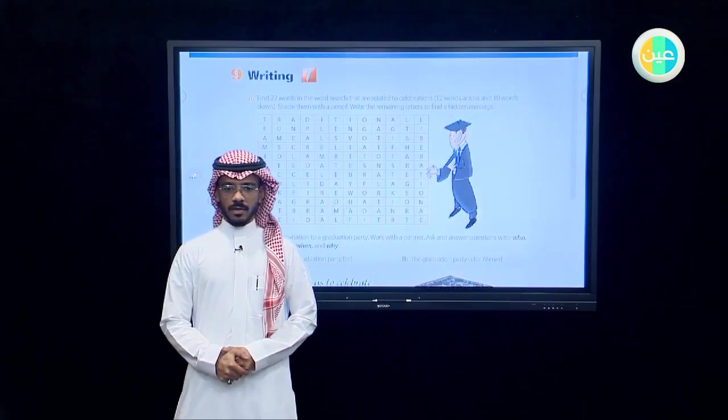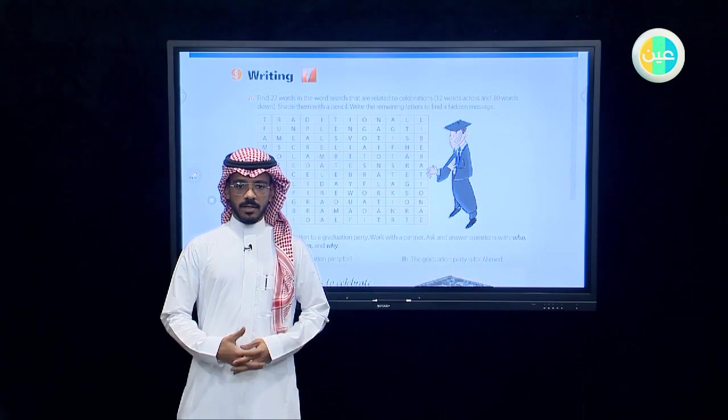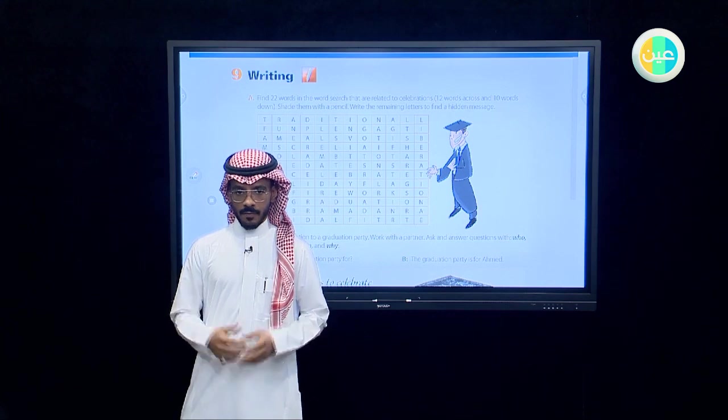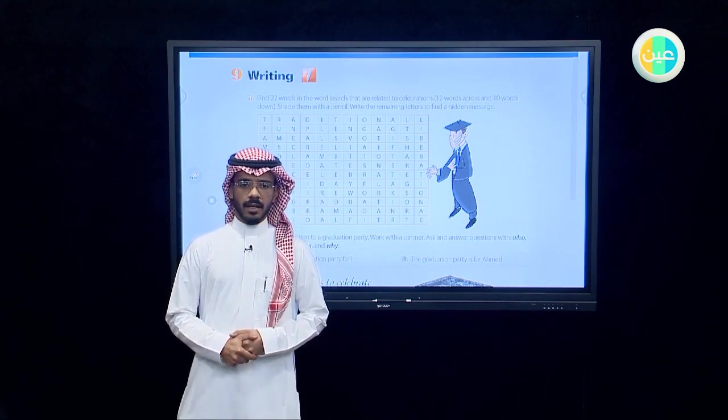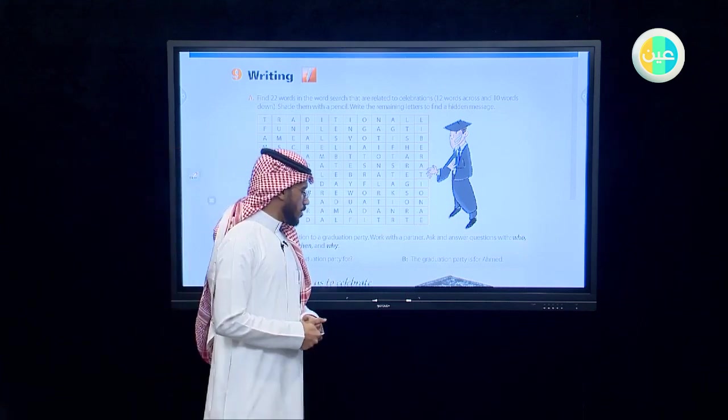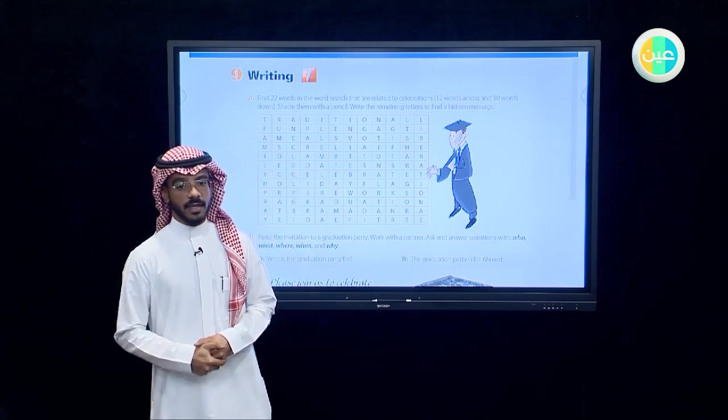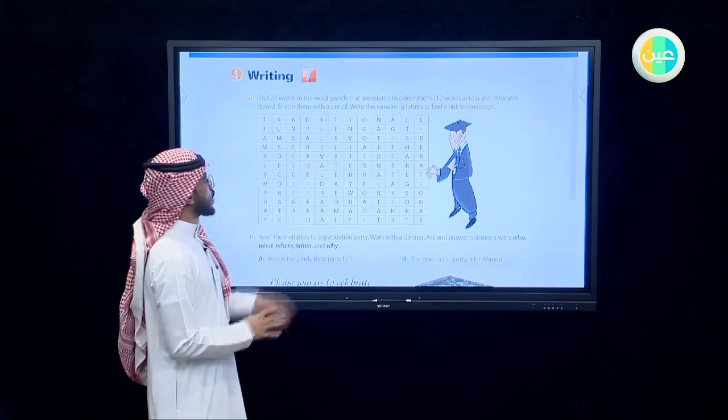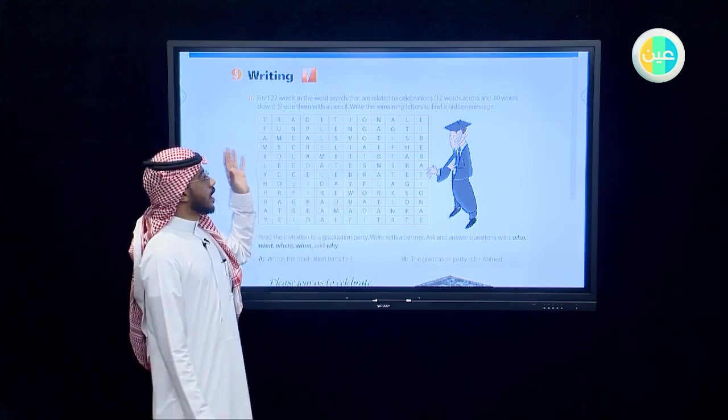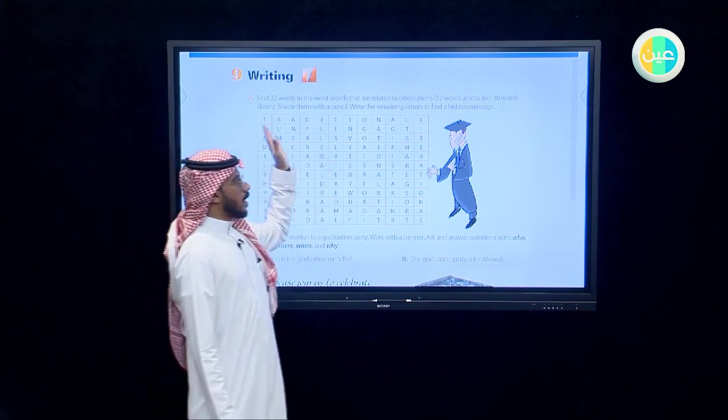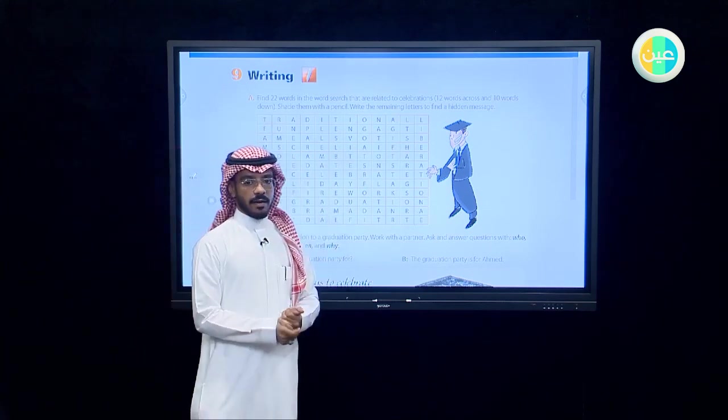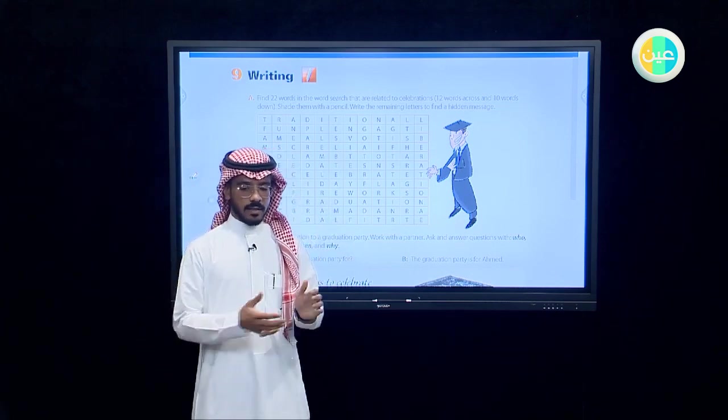As-salamu alaykum wa rahmatullahi wa barakatuh, hello and welcome to everyone. I will introduce today Super Goal 2 for first intermediate grade, the second semester. Let's move now to unit 6, page 54. We will talk about writing, how to write. Now here we have this schedule. We will find 12 words across and 10 words down, the related words that are related to celebration.